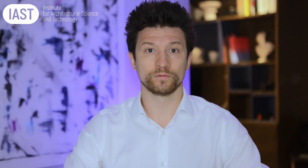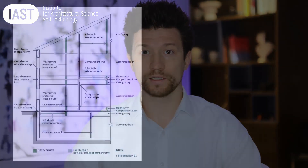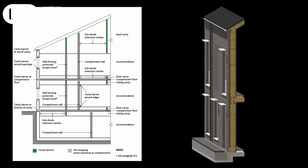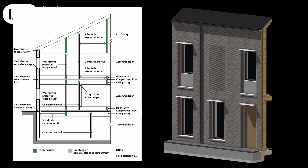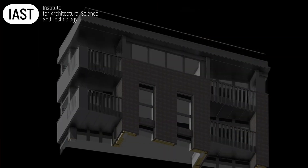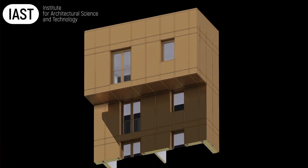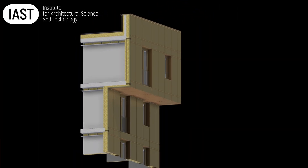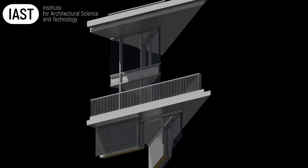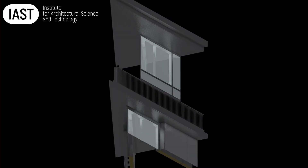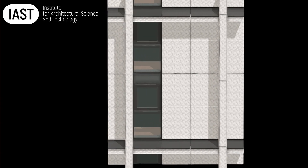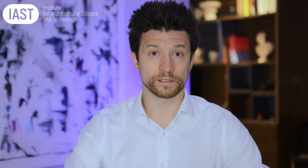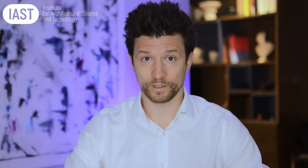The compartmentation diagram from approved document guidance on fire safety looks like this, and it appears to be appropriate for a building that looks like the diagram. However, modern buildings tend to be far more complex. The windows and doors vary in sizes and location on elevations of the building, and most buildings have cantilevered and recessed balconies as well as terraces. The diagram from the approved document guidance is hardly useful for these scenarios.